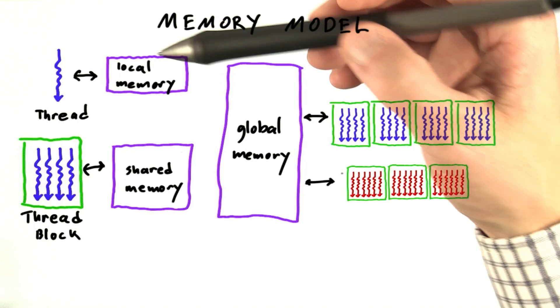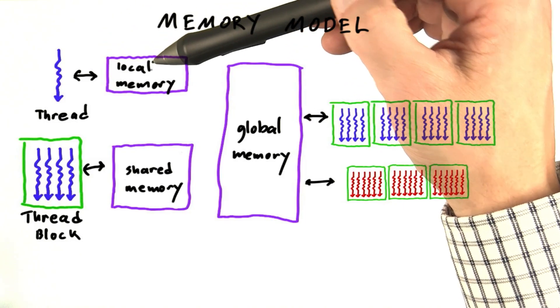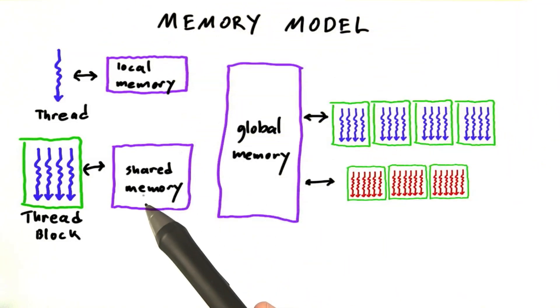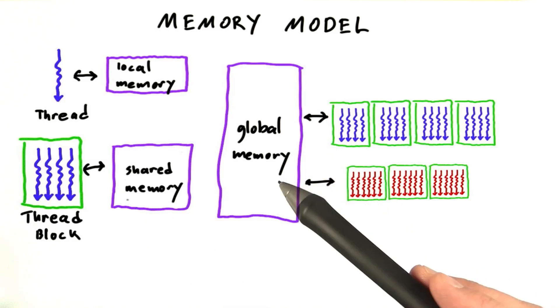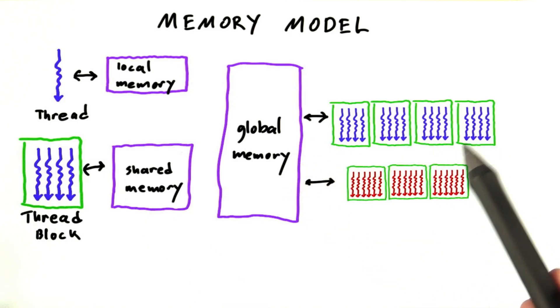So every thread, to recap, has access to its own local memory, has access to shared memory that's also accessible to threads specifically in its thread block, and to global memory, which is accessible to all the threads everywhere.